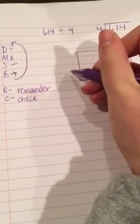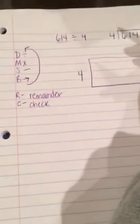The way the box method works is you draw a rectangle. On the left-hand side, you put your divisor, which is the 4, and then we have our dividend, the number we're going to be splitting up. Because our dividend has three digits, we're going to split our box into three parts. I'll put my 6 here in the hundreds place, my 1 in the tens, and then a 4 in my ones place.